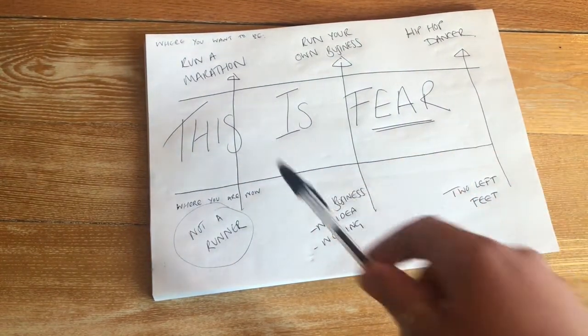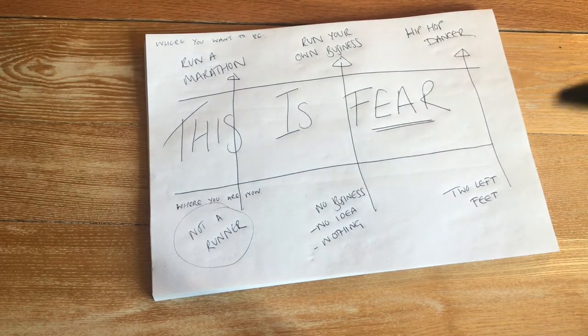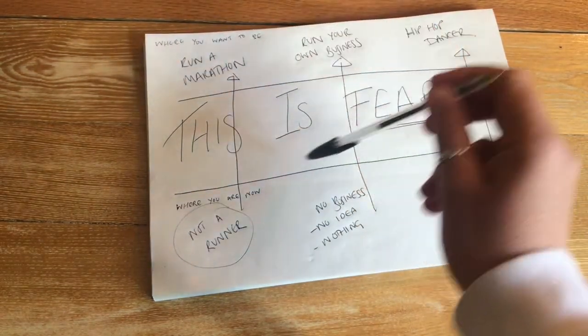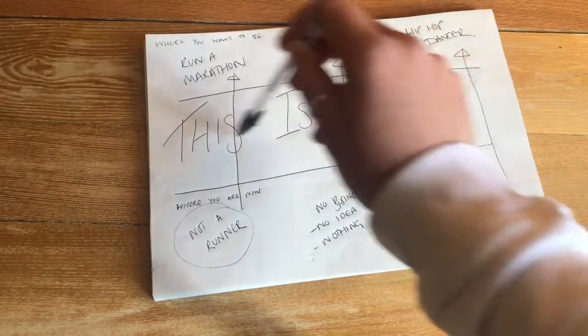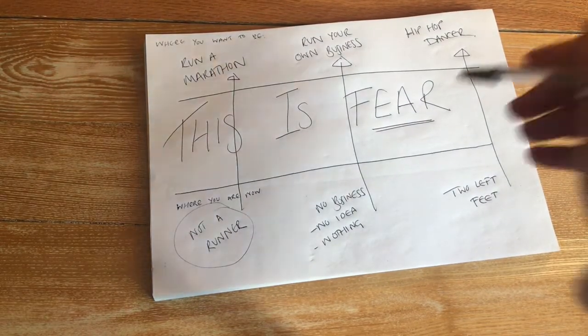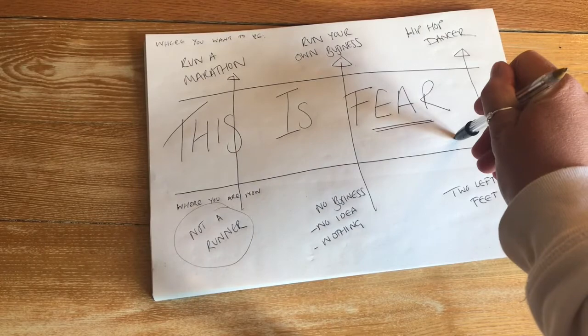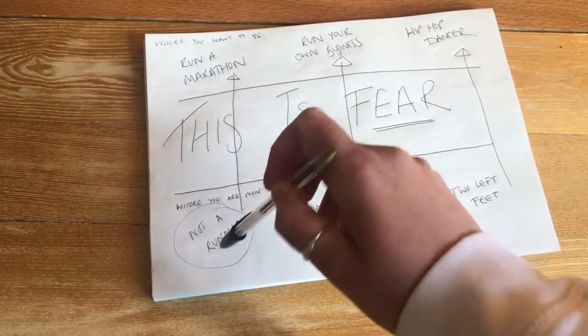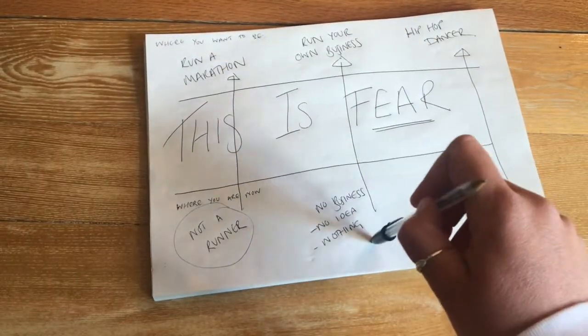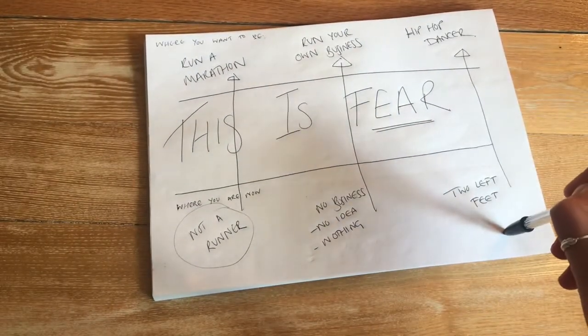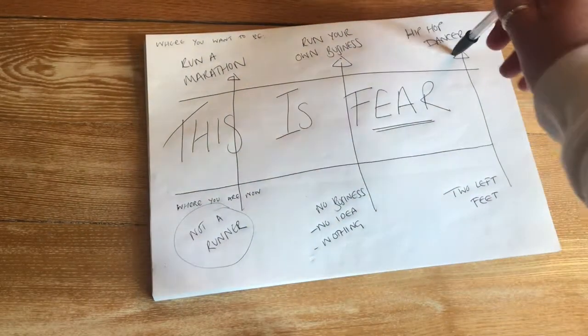And if you choose, because in life you always have a choice, if you choose to not run a marathon, to not run your own business, or to not be a hip-hop dancer, you have done so because fear has held you back. You've let fear control you. You've let fear be the reason that you haven't moved from not being a runner to running a marathon, from not running a business and having no idea where to start to running a business, from having two left feet equivalent when it comes to dancing to being a hip-hop dancer.